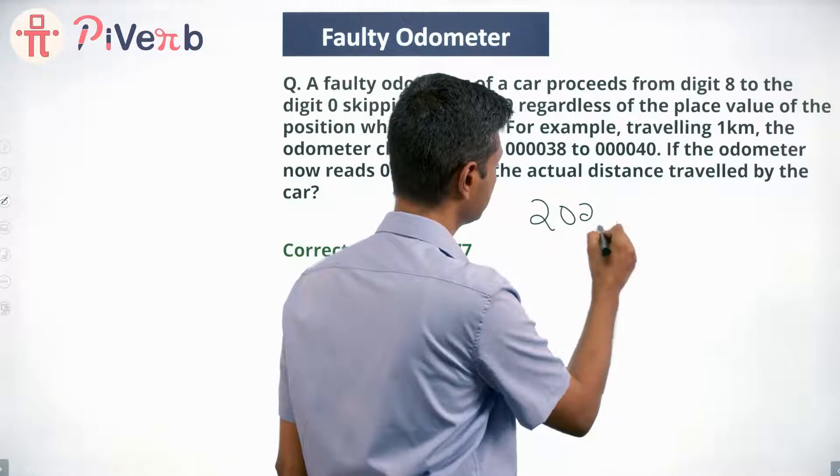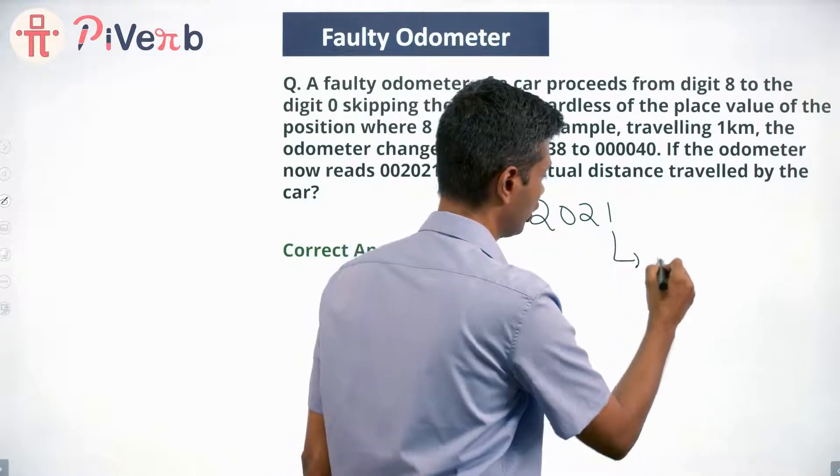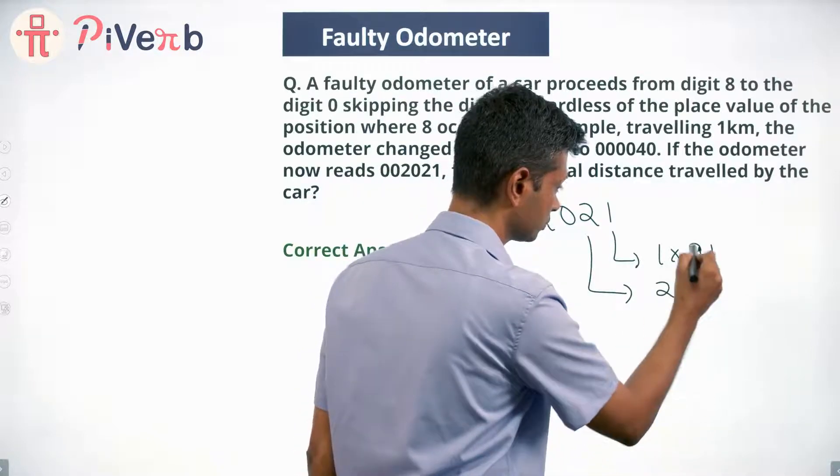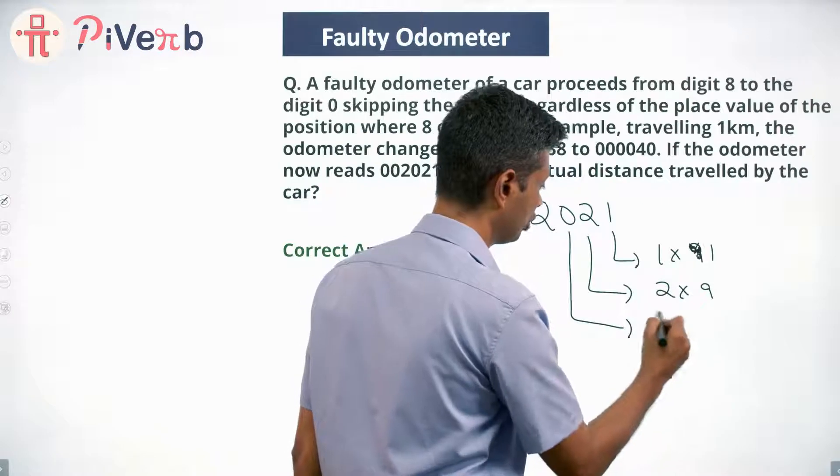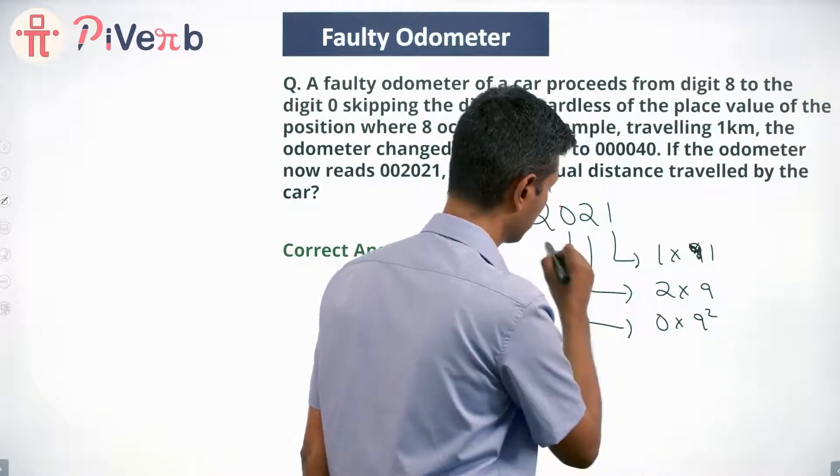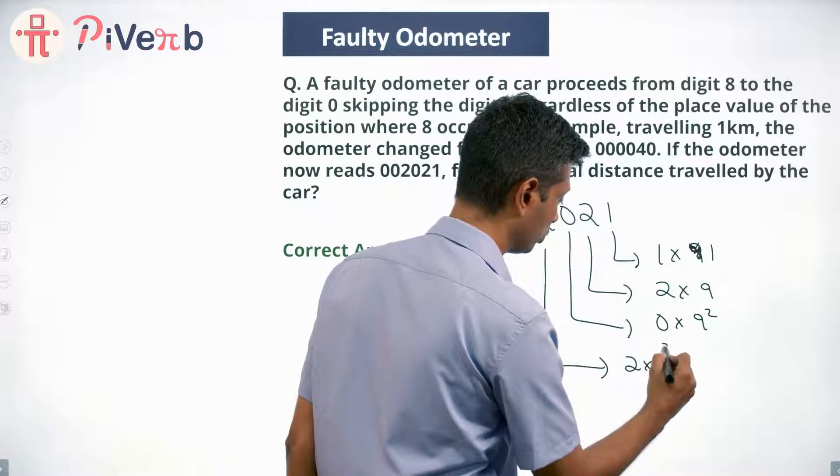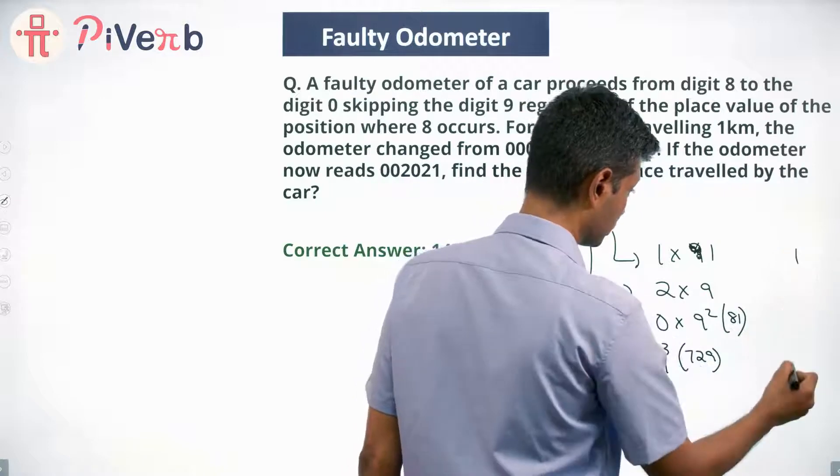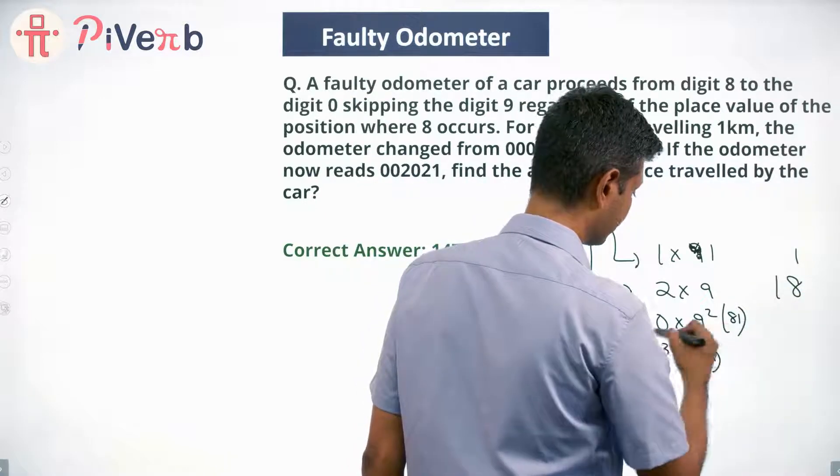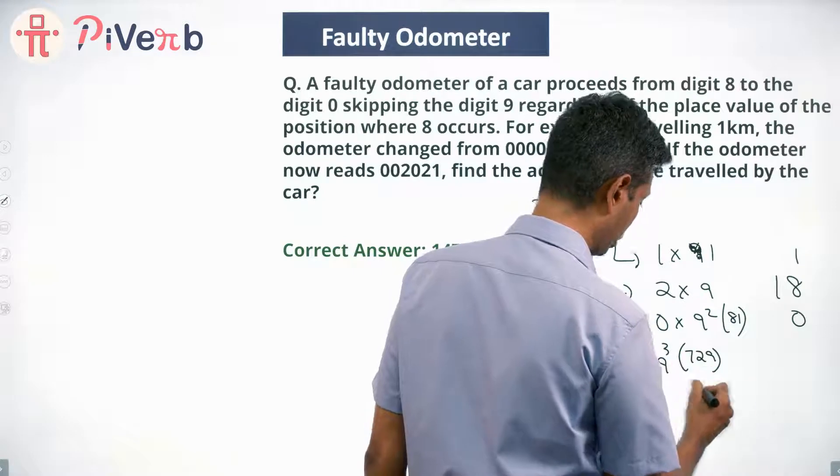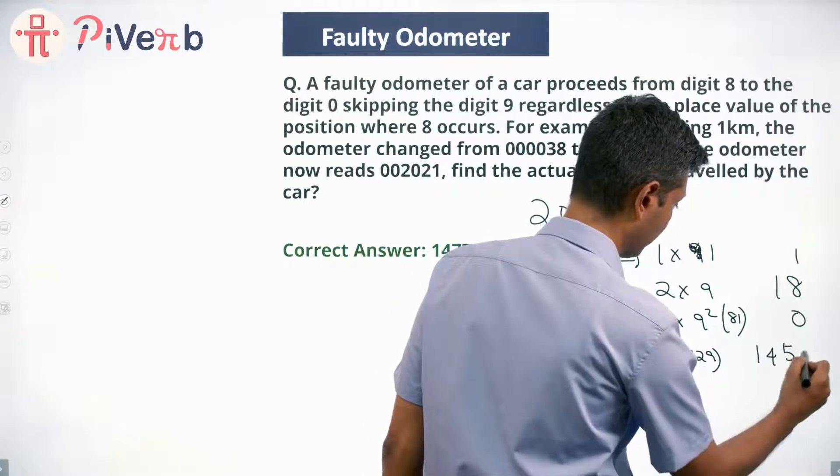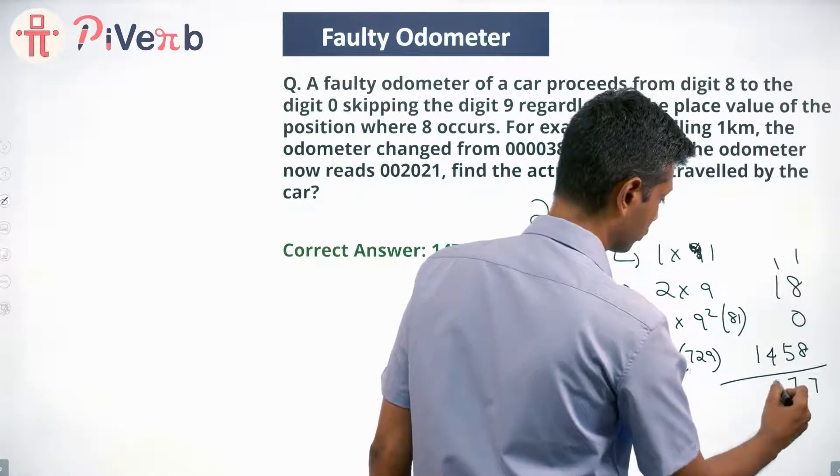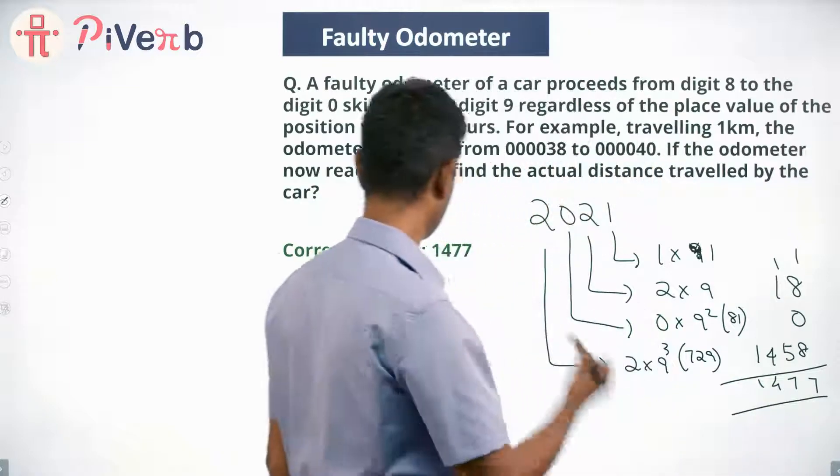We have 2021. I am going to take this 1 and say 1 times 1, this 2 and say 2 times 9, this will be 0 times 9 squared, this will be 2 times 9 cubed. 9 cubed is 729, 9 squared is 81. So this is 1 plus 18 plus 0. 729 times 2 is 1458. 9 plus 8 is 17, 2 plus 5 is 7, so 1477, that's what this is.